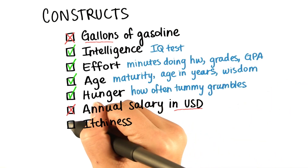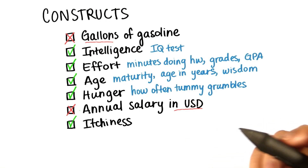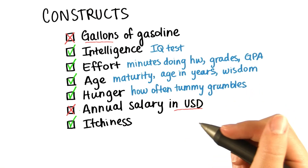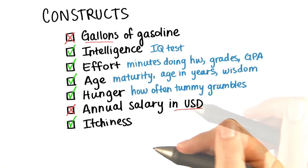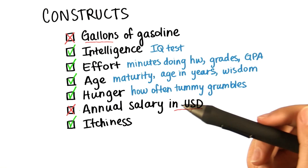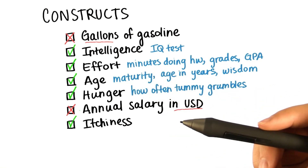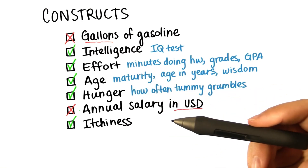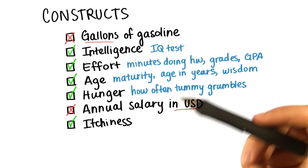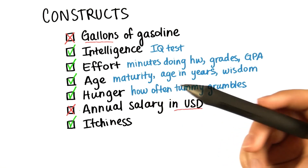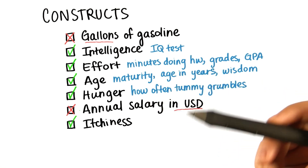And finally, itchiness is a construct. How would you define and measure itchiness? I'll let you ponder that one yourself. We have to think carefully about how to define and measure constructs. The descriptions for constructs that we settle on, and that allow us to measure them, are called our operational definitions.